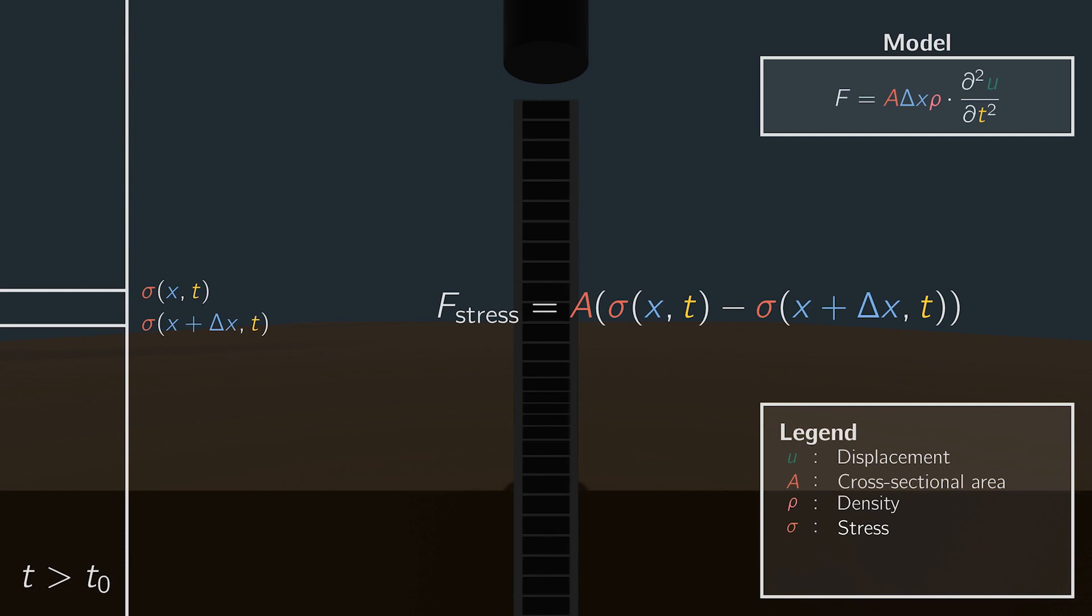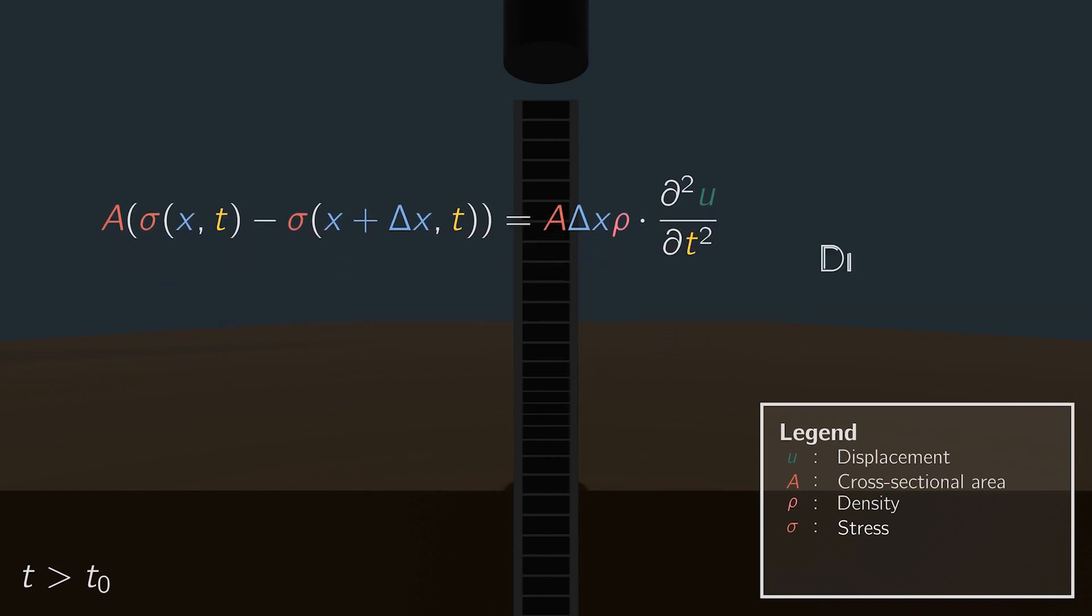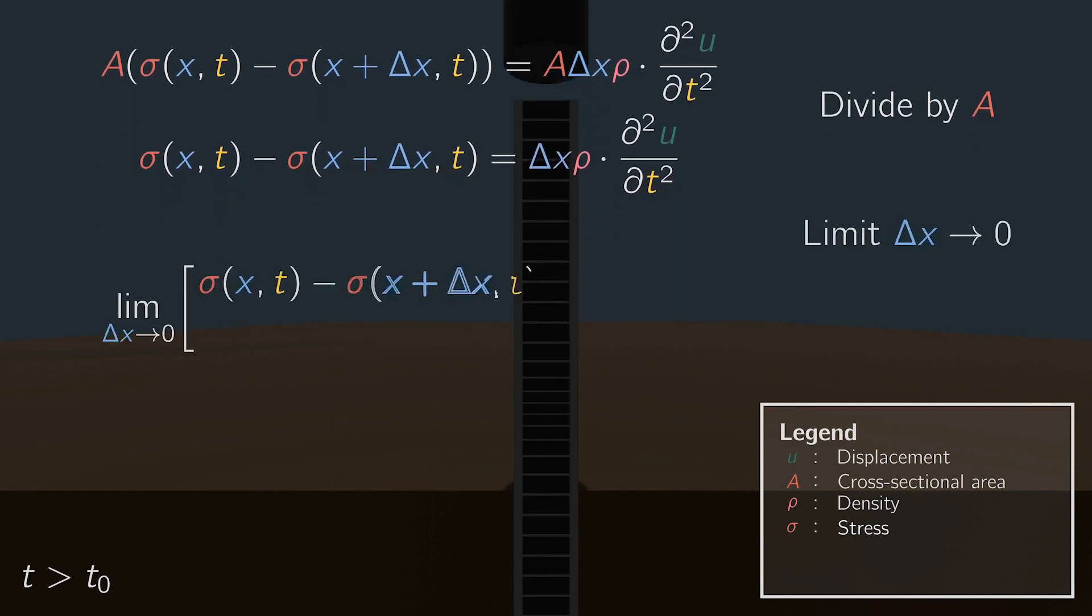In our simplified model, we only describe the displacements and stresses after the pile is hit, so T is larger than T0. Other forces, such as friction with the soil, are neglected. Let us now rearrange and simplify the equation, and find out that our equation is actually the wave equation. We start by dividing both sides by A. To go from a discrete equation to a continuous one, we are interested in an infinitely thin slice of the pile. Therefore, we will divide the model by delta x, and then take the limit of delta x going to zero. What we have found on the left-hand side is per definition the partial derivative of the stress with respect to x.